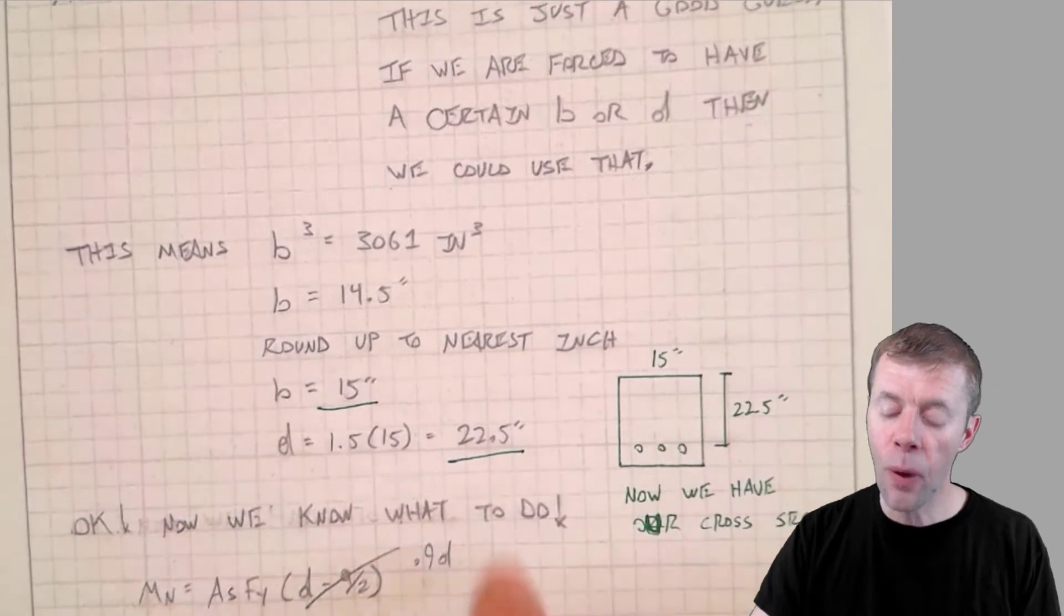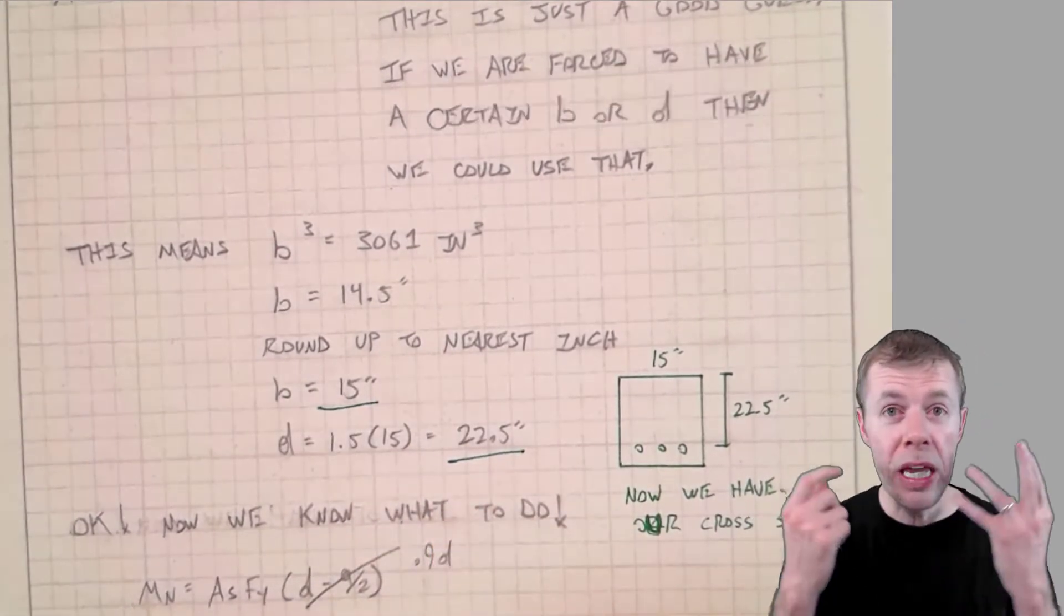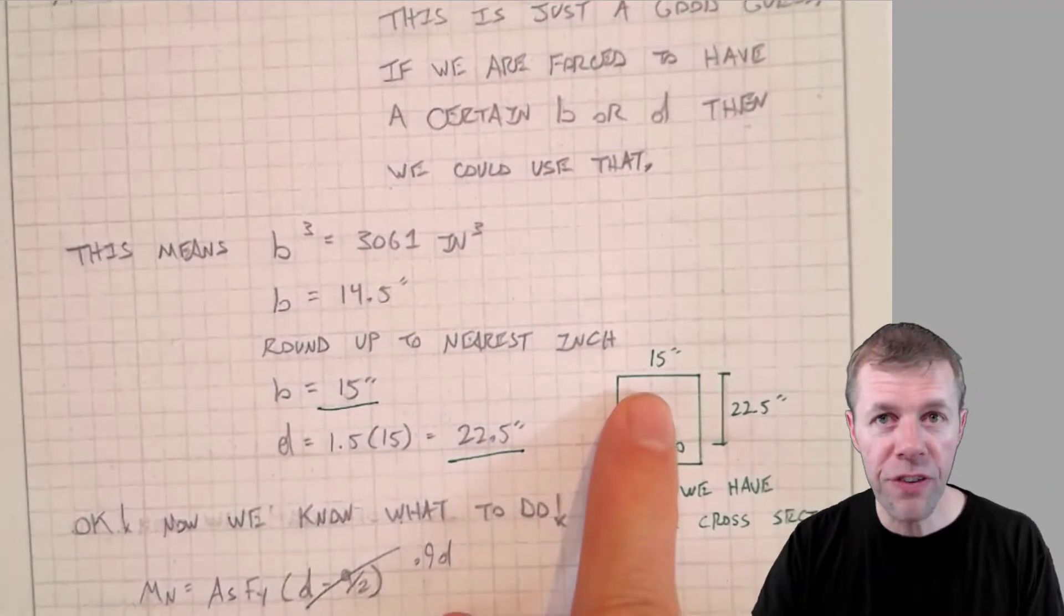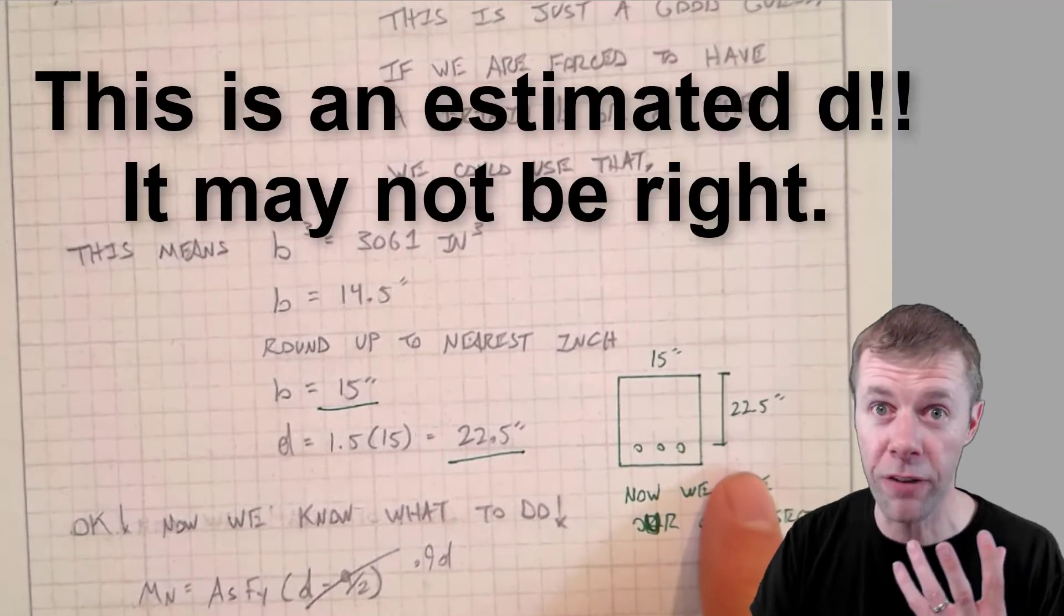You do not round this. But, ladies and gentlemen, we now have an estimate from our cross-section. We know our B is 15 inches. We know our D is 22.5, or at least that's a great first guess.